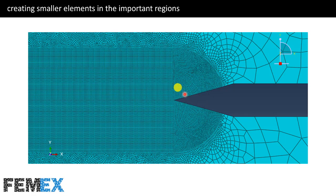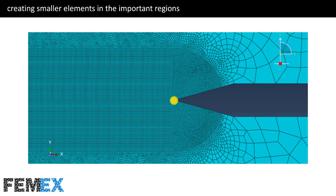Here, in this region, we have a stress concentration. In this region we have created bigger elements, and in this region we have created smaller elements. The crack will initiate and propagate from this point, so we have created smaller elements around the stress riser, making the simulation accurate enough.